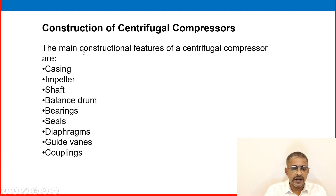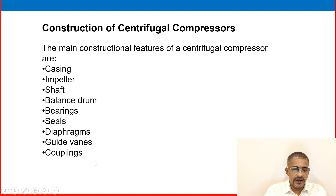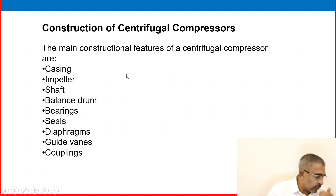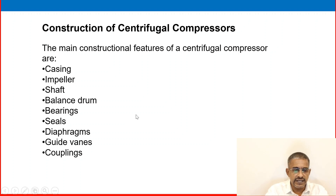The constructional features of a centrifugal compressor are: casing, impeller, shaft, balance drum, bearings, seal, diaphragm, gateway, and coupling. Most of this information is important for mechanical personnel, and process people should also have a basic understanding when working with a compressor.